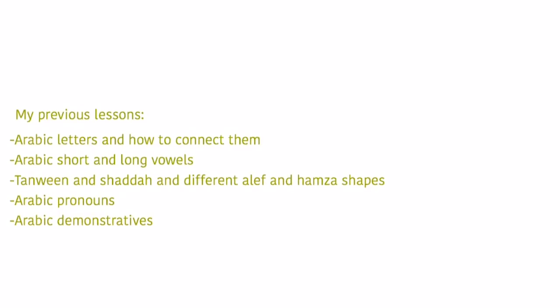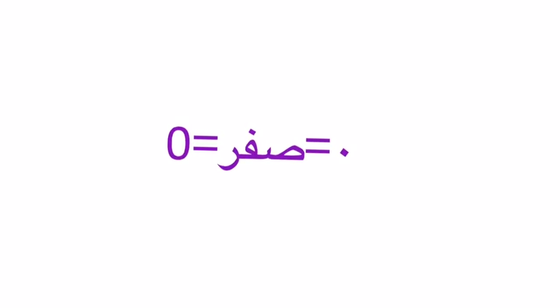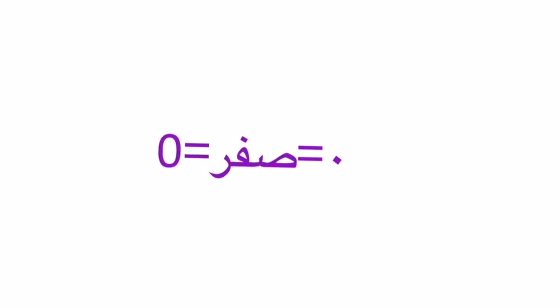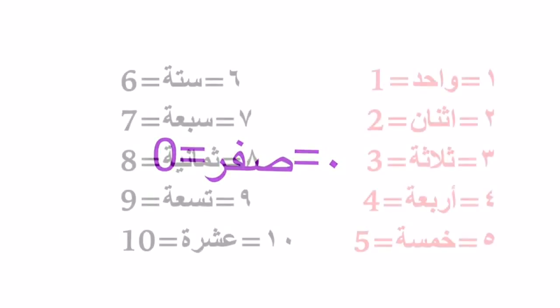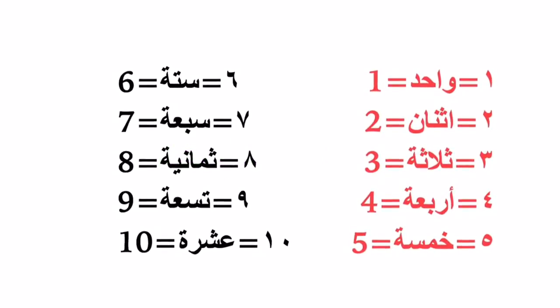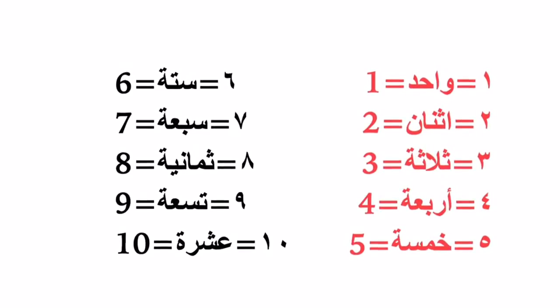Starting with the first number which is zero — it's actually a little tiny dot which can change the whole number, so take care. Now the first ten numbers are the basic numbers, starting by one.